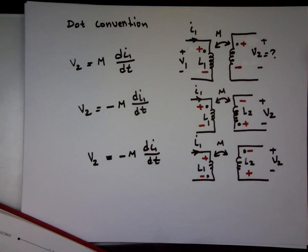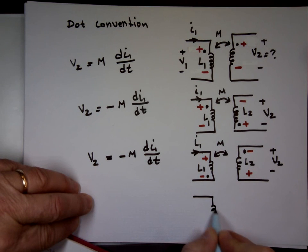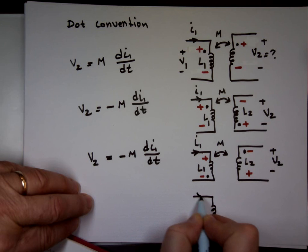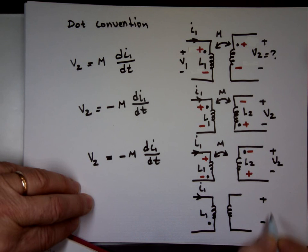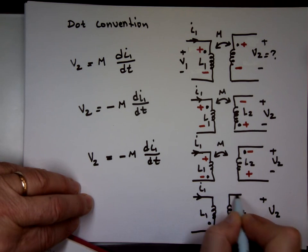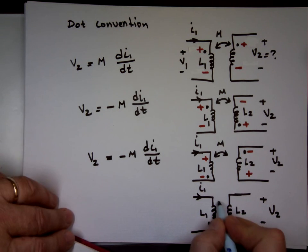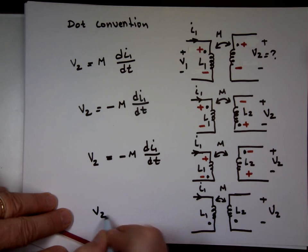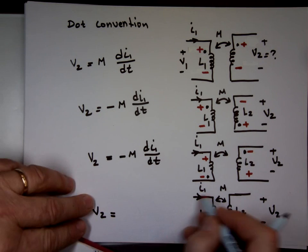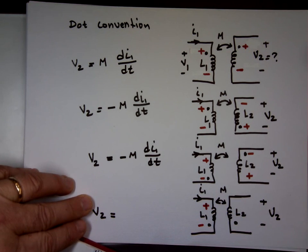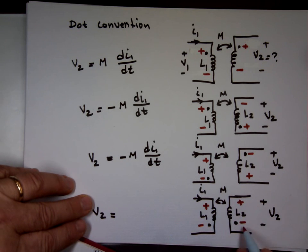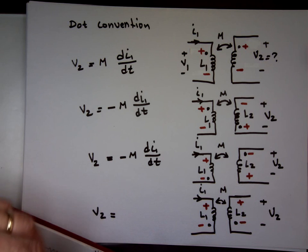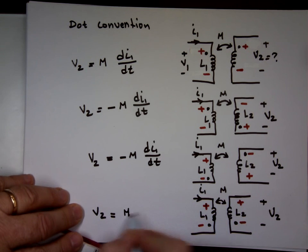The last option, which covers all of them: the dot is here on top for L1, current I_1 goes down this way. V2 is defined with dot at the bottom for L2. The current comes down — plus, minus — so the dot is negative on L1, meaning negative here and plus at the other end on L2. Look at the relationship between V2 and this polarity — are they in the same direction? Yes. So V2 is going to be positive M·dI1/dt.